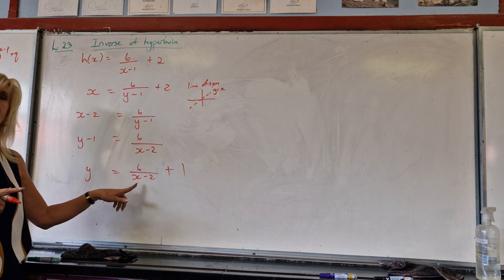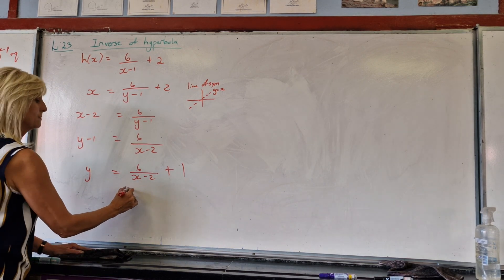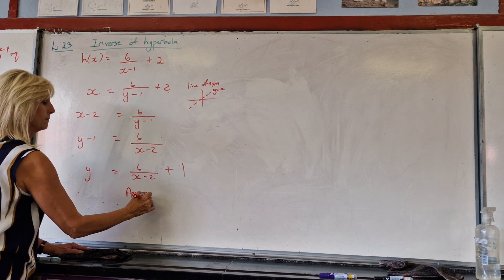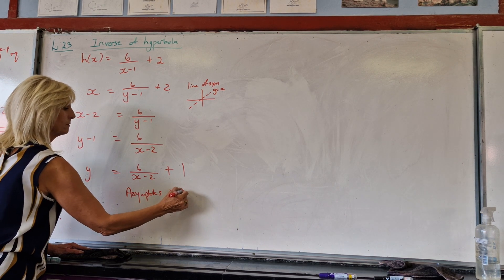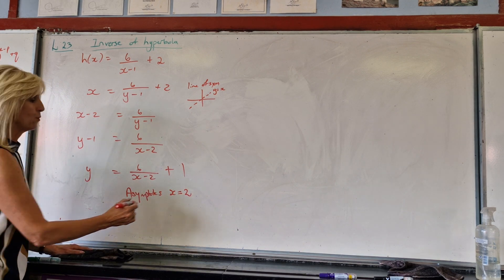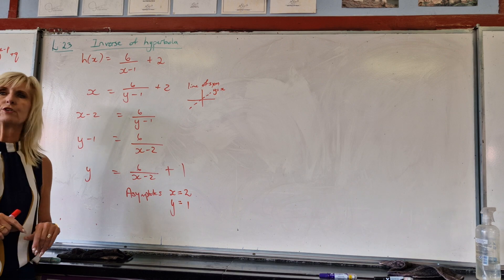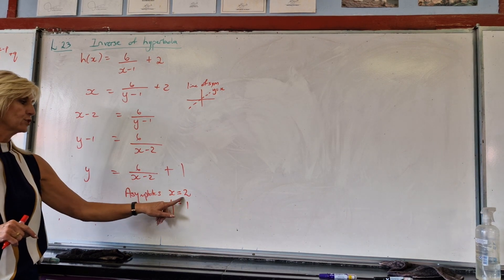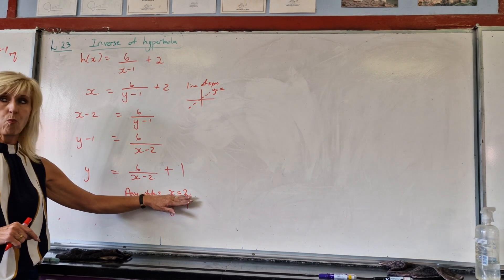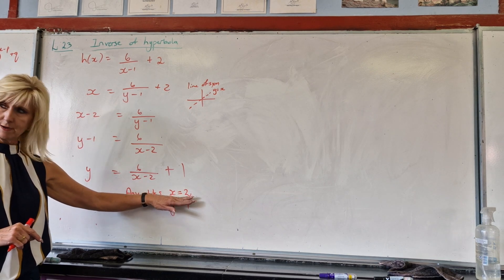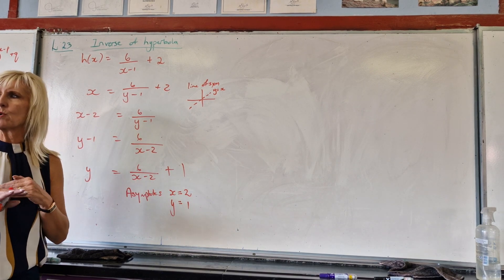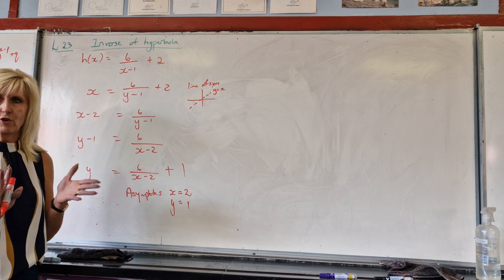Now if you look at the asymptotes here, the asymptotes will be x equal to 2 and y equal to? Now it's not on the board, but tell me, the original one, the asymptotes were x equal to 1 and then y equal to 2 because everything swapped up. Have you got it?